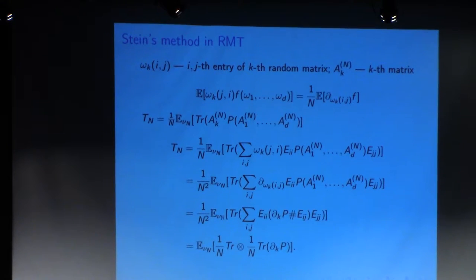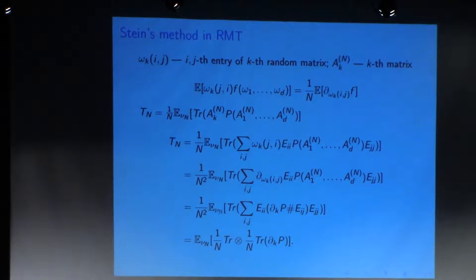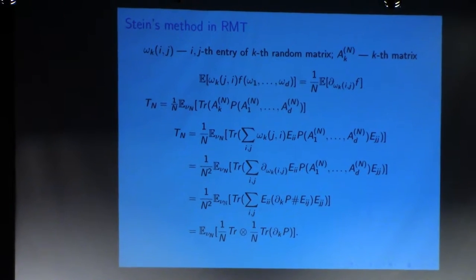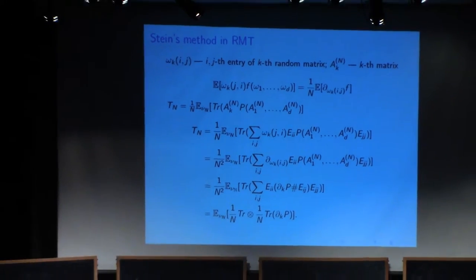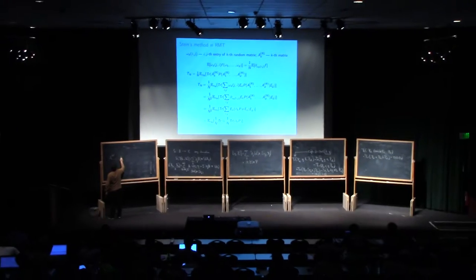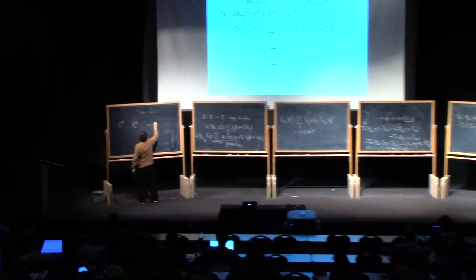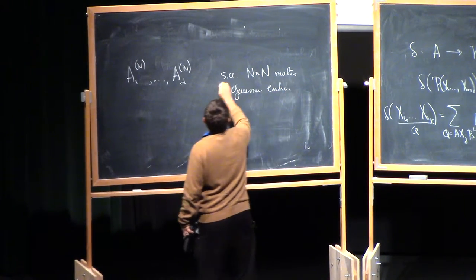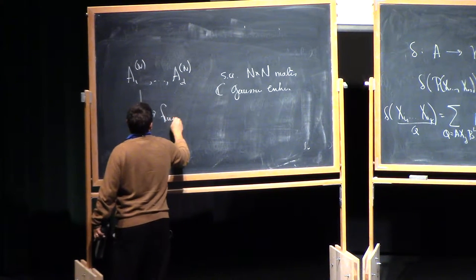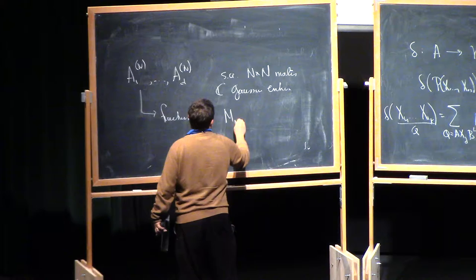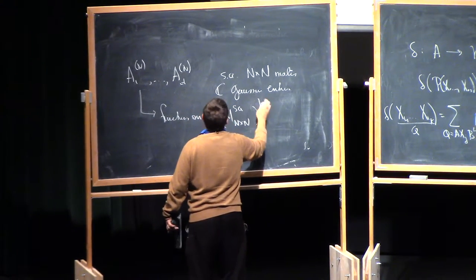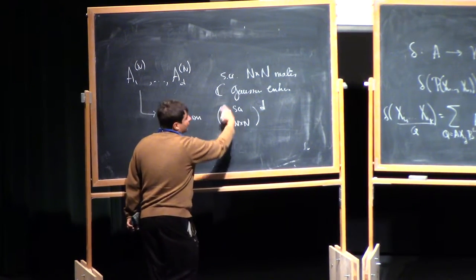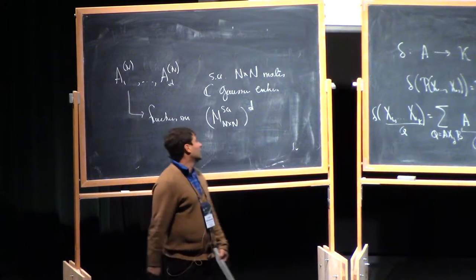I will denote by omega_k(ij) the function which picks out the ij-th entry of the k-th matrix. The setting is that we have matrices A_1 through A_{d,n}: these are self-adjoint n by n matrices with complex Gaussian entries. So omega_{ij,k} is simply the ij-th entry of the k-th matrix viewed as a function on my space.